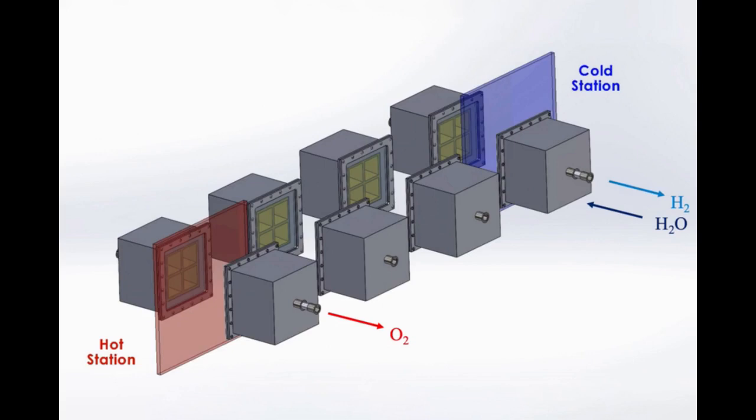reactors on opposite sides of the circular track are allowed to exchange heat through thermal radiation. Hot reactors get cooled while cool reactors get heated. This keeps the heat within the system.